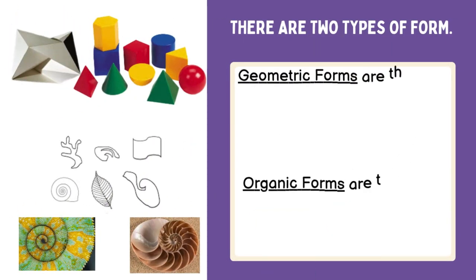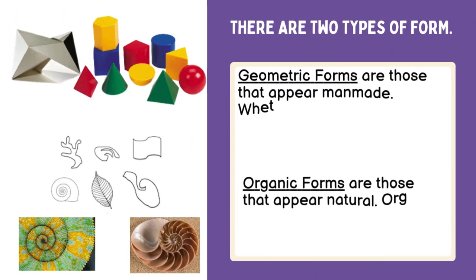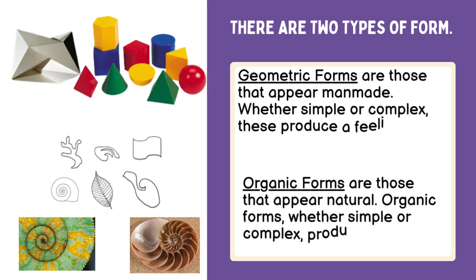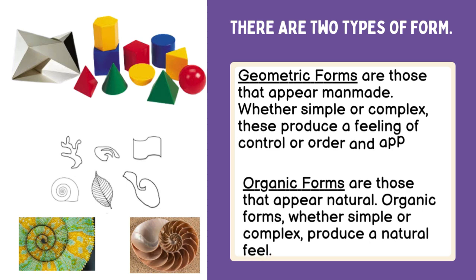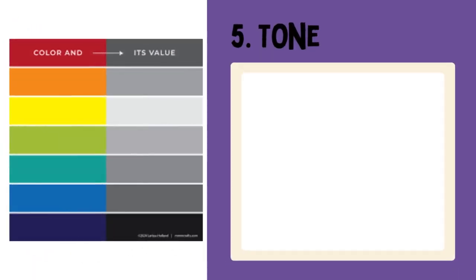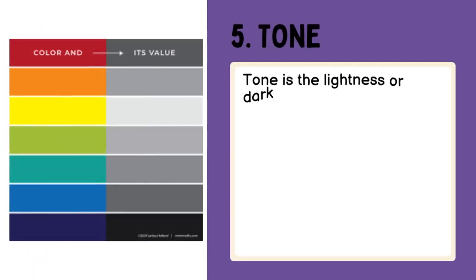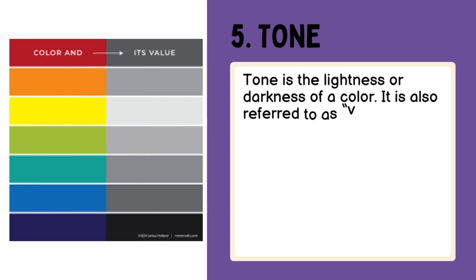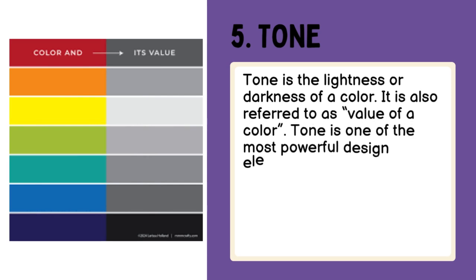There are two types of form. Geometric forms are those that appear man-made. Whether simple or complex, these produce a feeling of control or order and appear clean and sterile. Organic forms are those that appear natural. Organic forms, whether simple or complex, produce a natural feel. Tone is the lightness or darkness of a color. It is also referred to as value of a color. Tone is one of the most powerful design elements.